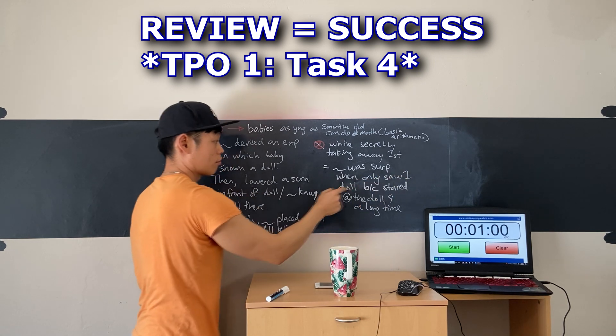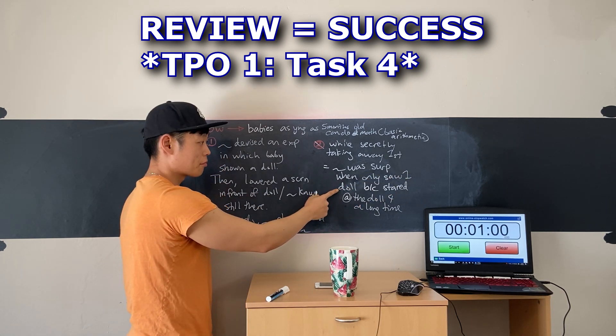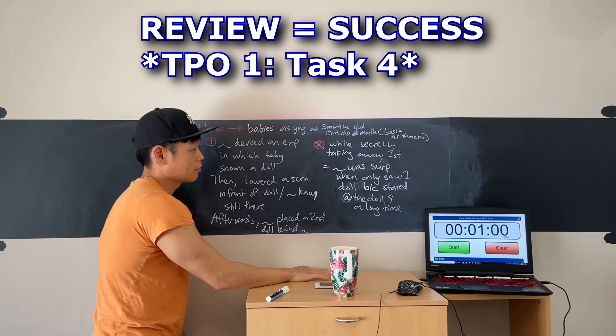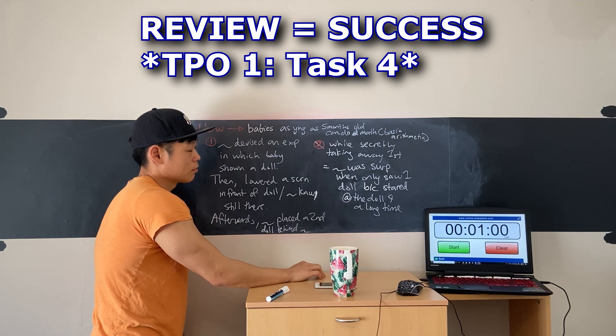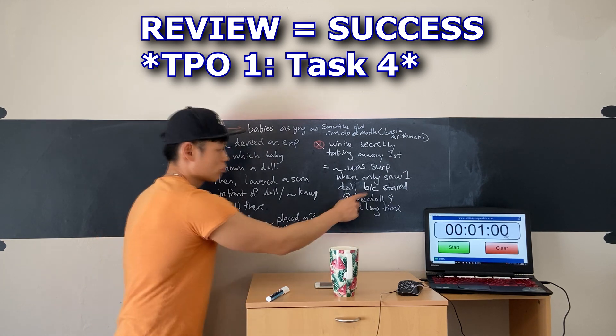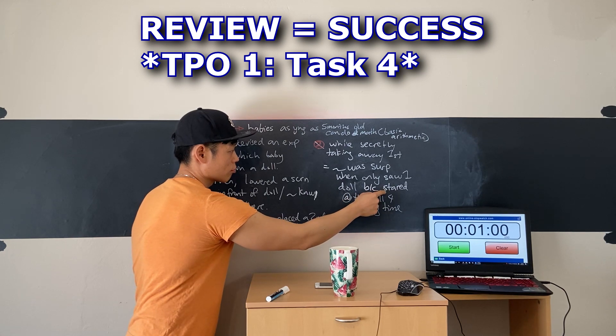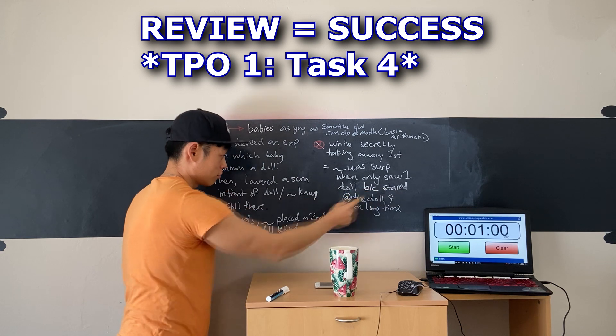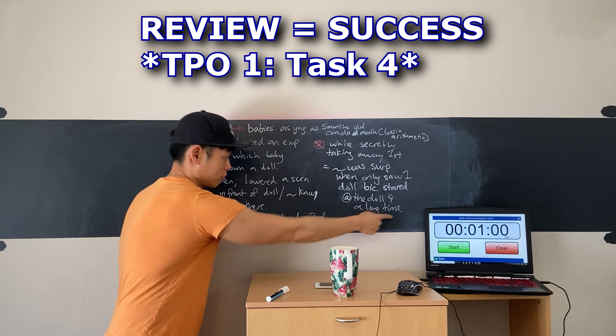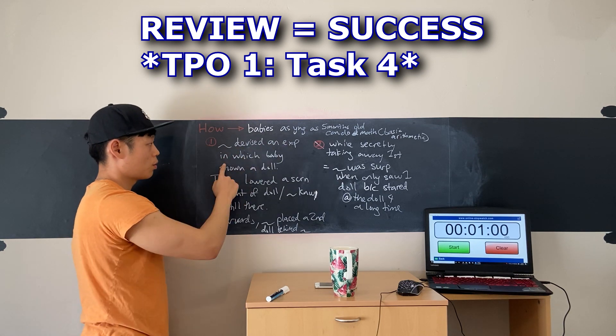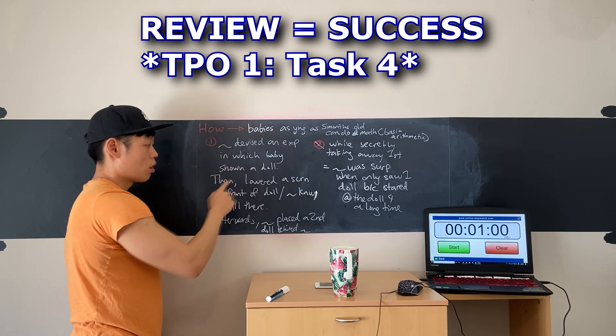How could the researchers tell that the baby's surprised? Well they recorded the baby's eye movements on camera, and we know that when a baby is surprised by something, a loud noise or an unexpected flash of light maybe, it stares at where the noise or light is coming from. And that's what the babies in the experiment did. They stared because the baby knows that if you add one doll and one doll you should have two dolls, so when it sees one doll then it stares because it's surprised.